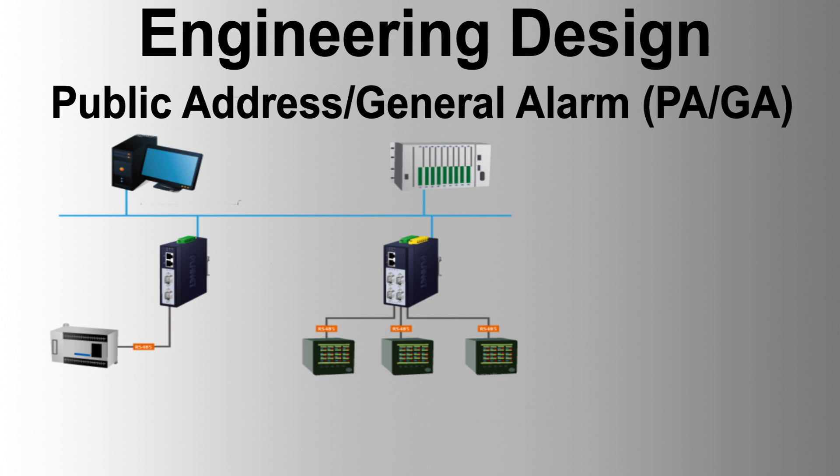Flashing beacons: supplement the audible PA-GA system in high ambient noise locations. Features include a xenon tube light source, 1 Hz flash rate, 5 joules flash energy, explosion-proof certification, IP67 protection, and ETS 300119 class 3.4 compliance.